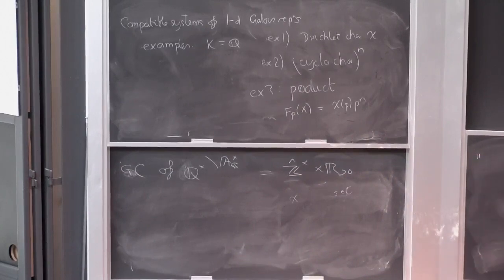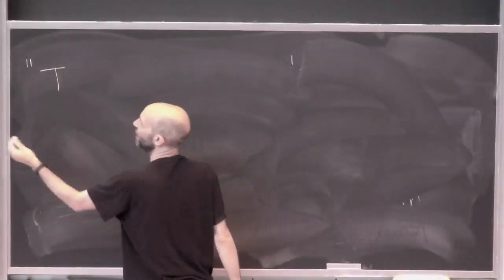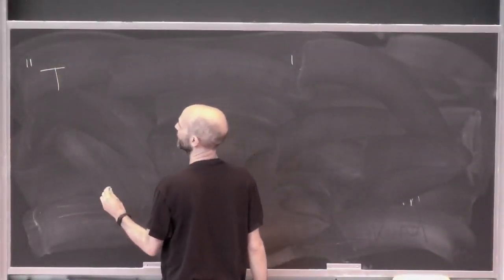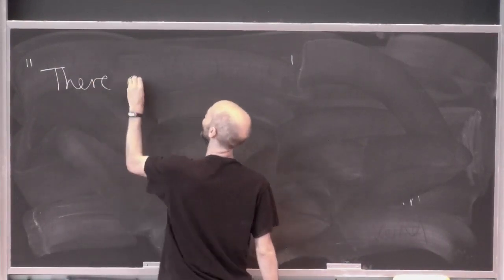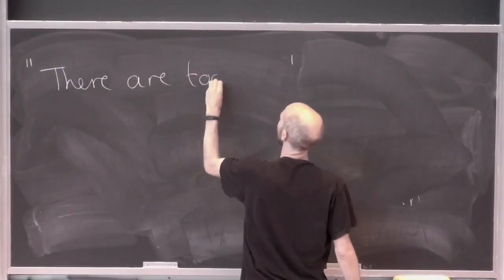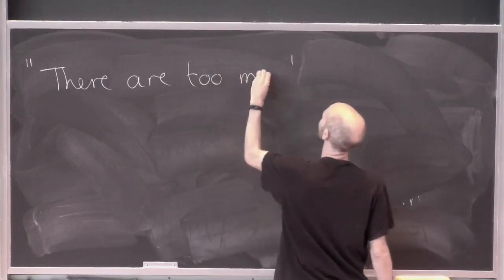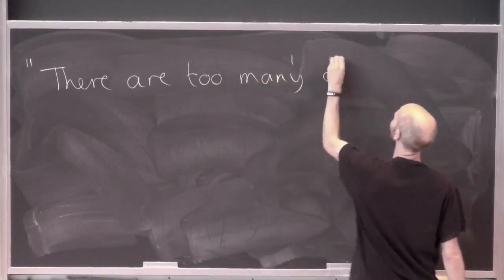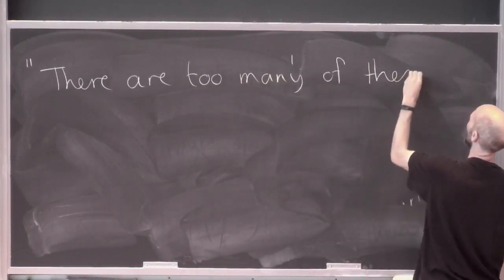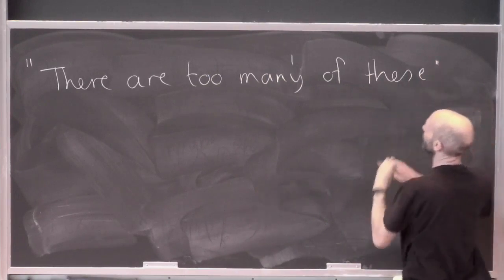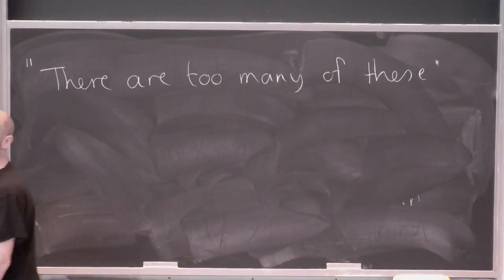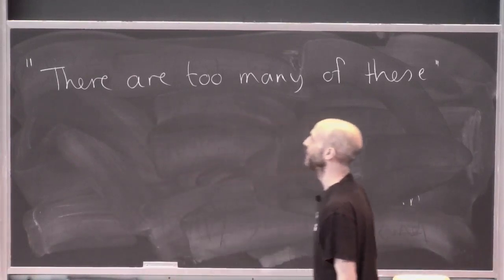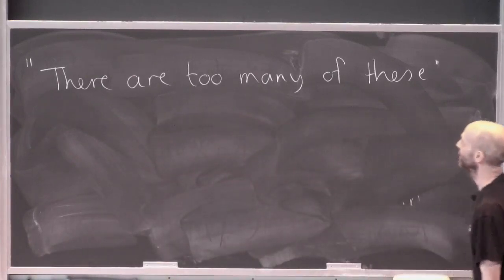I'll quote from Richard Taylor's notes: he defined a Grössencharacter, didn't do any examples, and then just wrote 'there are too many of these.' What he really means is the complex numbers are a scary thing if you're a number theorist used to countable stuff. So there are too many Grössencharacters.